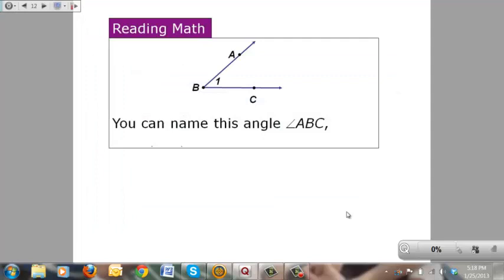You can name this angle as angle ABC, listing it A, B, C, right here. You could also name it as angle C, B, A, or you could just call it angle B,